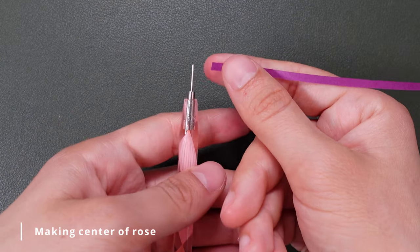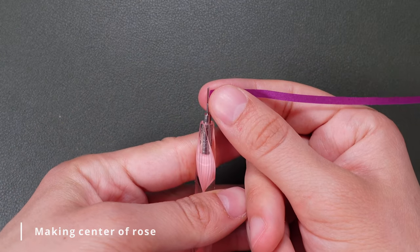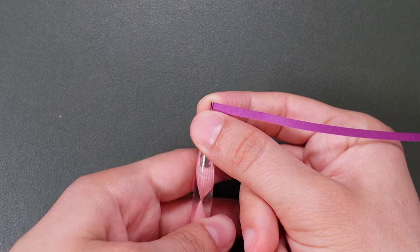For the center of the rose I'm just going to make a simple tight coil and I'm using a dark shade of magenta. I really love this color.